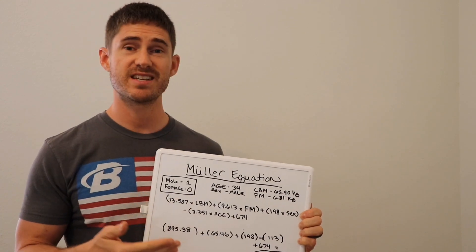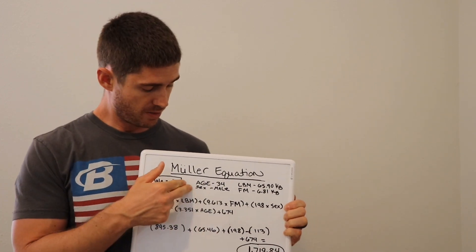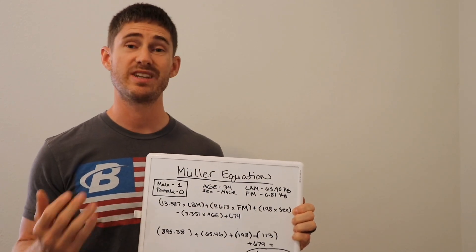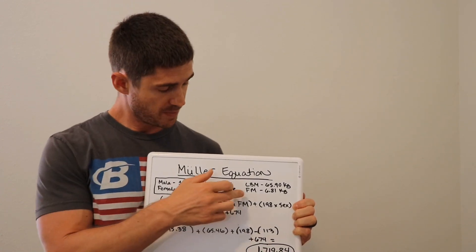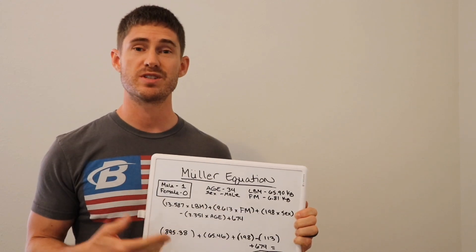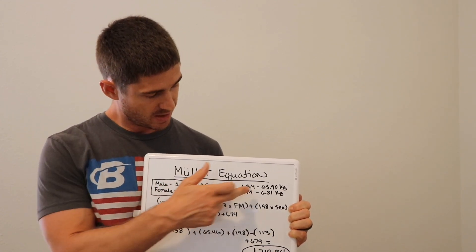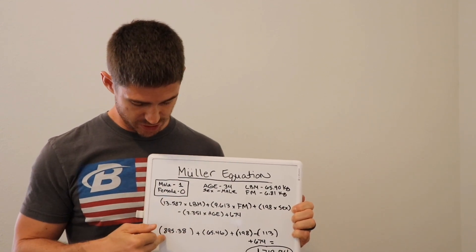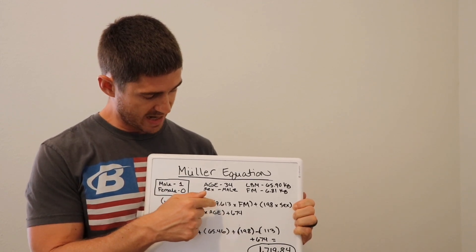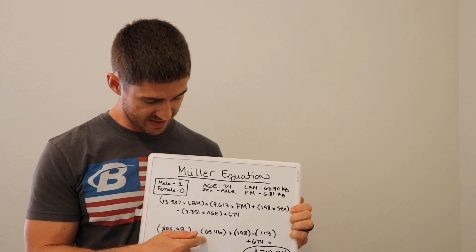So you're going to do 13.587 times your lean body mass in kilograms. The example we're using is a 34-year-old male who has a lean body mass of 65.90 kilograms — roughly about 145 pounds — and a fat mass of 6.81 kilograms, which is roughly about 15 pounds of fat. Plugging in 13.587 times 65.90 kilograms gives you 895.38. You then add 9.613 times your fat mass in kilograms — 9.613 times 6.81 gives us 65.46.